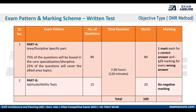As far as the marking scheme is concerned, for Part A of the paper — the architecture-specific questions — there will be 80 questions for 80 marks, that is one mark each. Of these 80 questions, 75% will be related to core architecture, whereas the other 25% will be related to allied area topics, for example questions related to environment. Part A also has negative marking: for every wrong answer, one-third marks will be deducted.